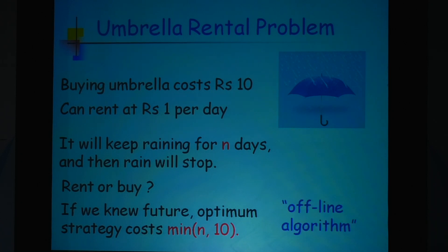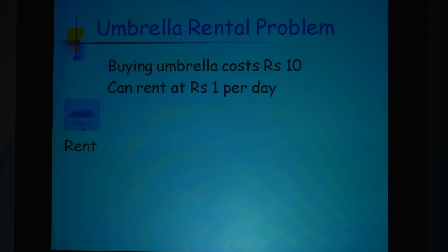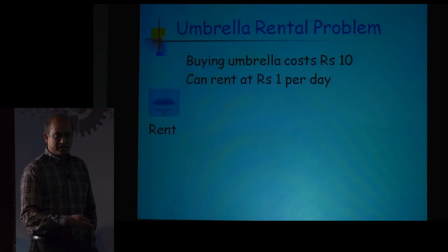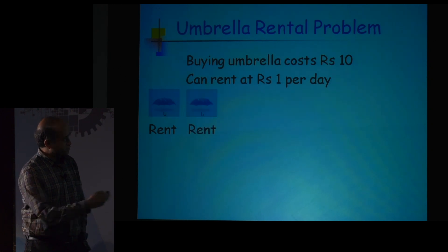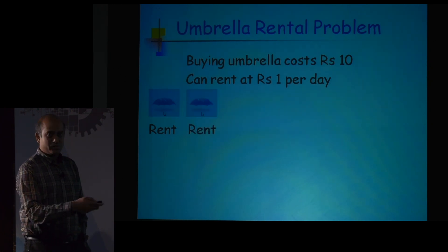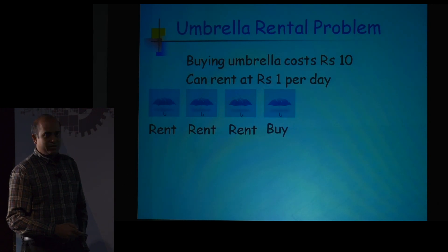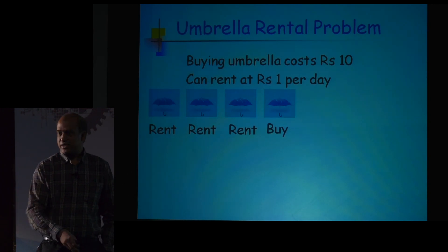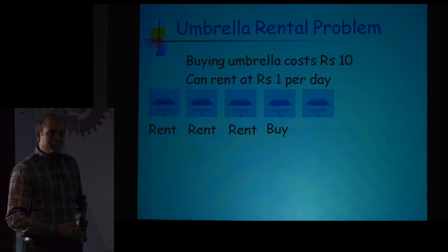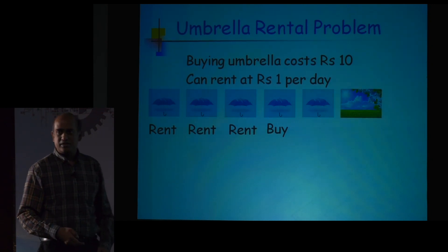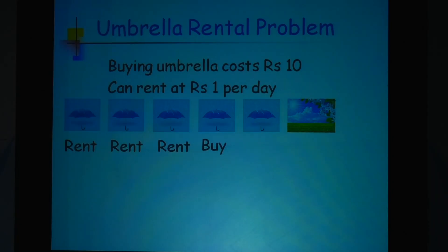Somebody who knows the future is called an offline algorithm — of course we are in a setting where we do not know the future. For example, on day one you decide to rent and it rains, you rent again, you keep renting, and on day four you decide you've had enough and buy the umbrella. Now it depends on what happens — if on the sixth day it is sunny, you end up making a loss.